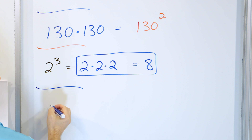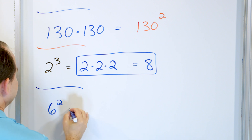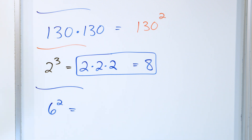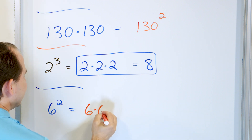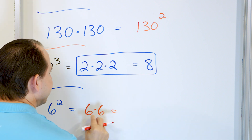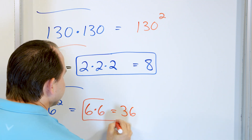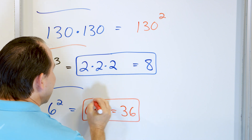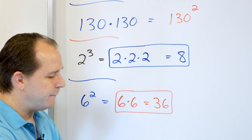And then our very last problem: six squared. Let's write it out and calculate it. The base is six and it's multiplied by itself — there are two of them. So that's six squared. And six times six is 36. So six times six equals 36, and that's six squared written out and calculated.